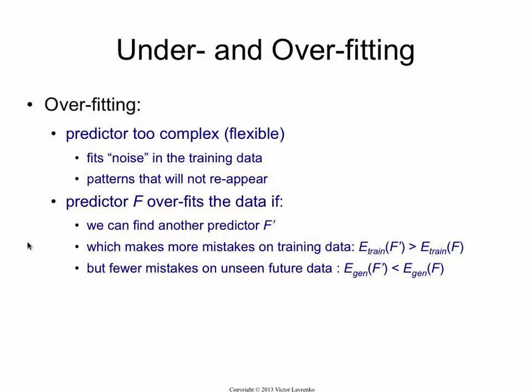By noise, I mean things that seem useful in the training data but will not appear again when you run your algorithm on future data. The formal definition: a predictor f overfits the data if we can find another predictor f prime that satisfies two conditions. First, f prime makes more mistakes on the training data — its accuracy is not as high as f. But on the data that comes tomorrow, f prime is going to do better than f. That is the definition that f has overfit the data — you could take something simpler, which is not as good today, but it will do better tomorrow.